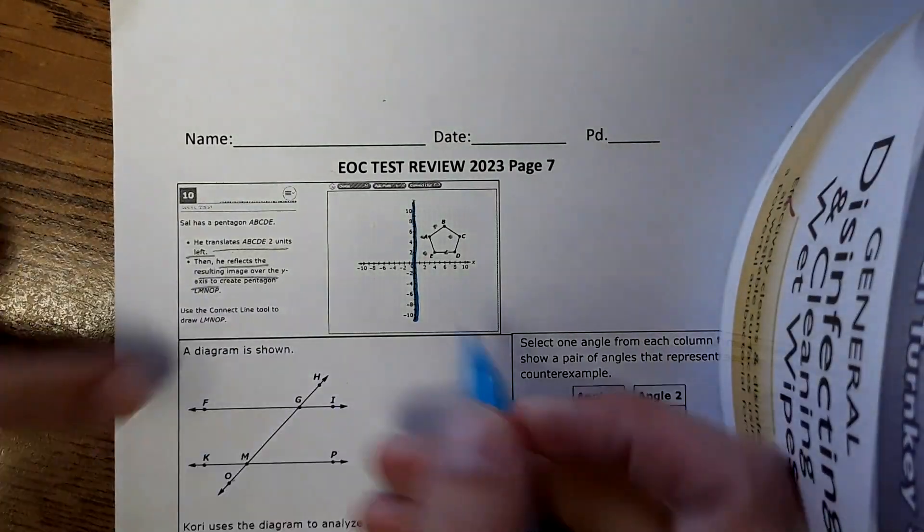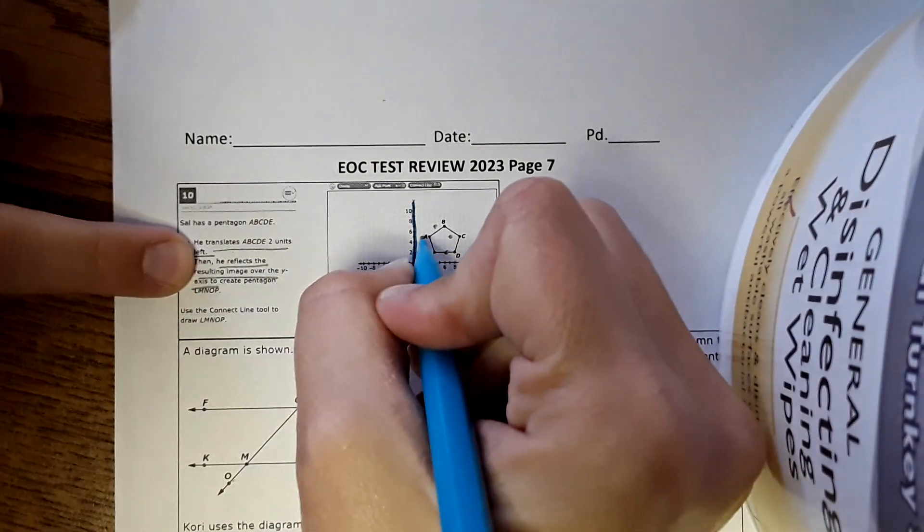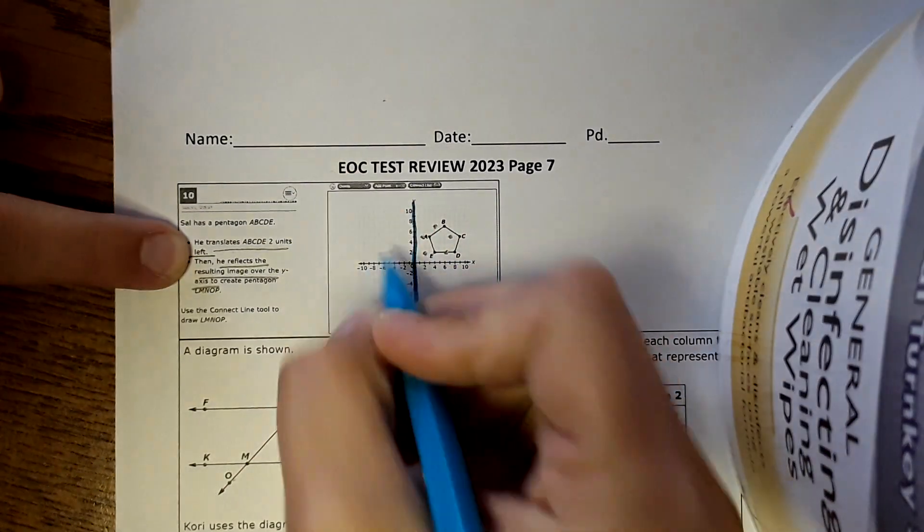So I moved every point over two units, then reflected over the y-axis. I've identified the y-axis, and then what it means by reflect is just put those points the same distance away from the y-axis on the other side.